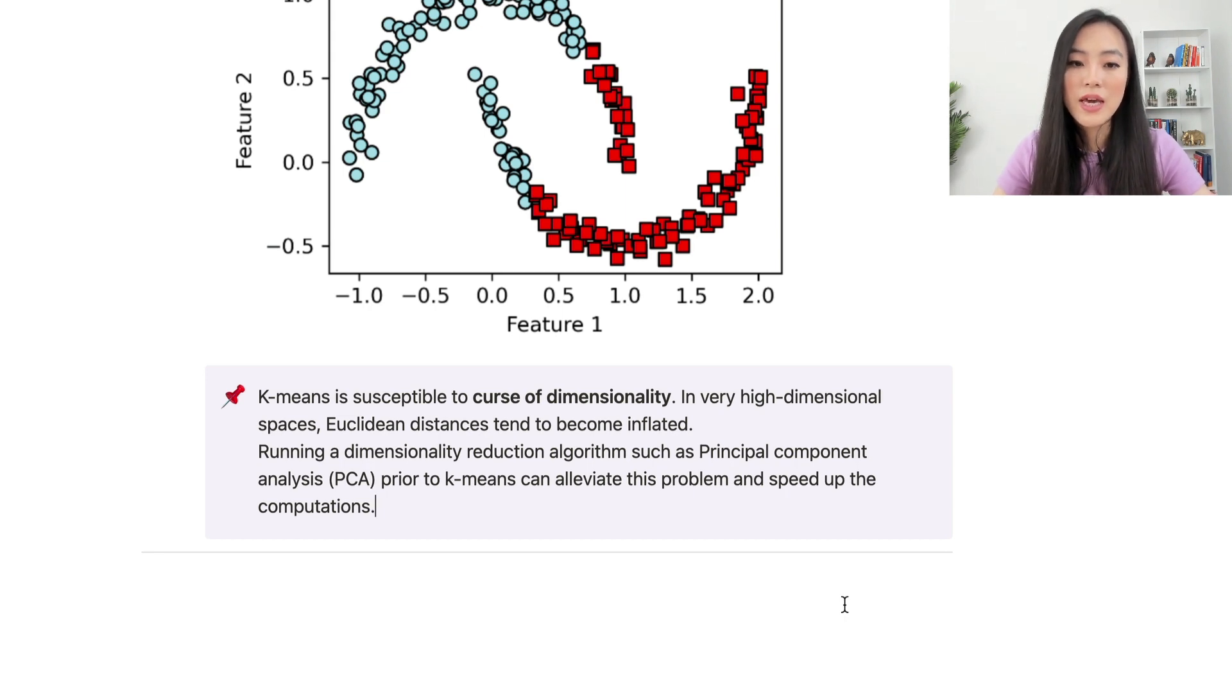Another downside of the K-means algorithm is that it's susceptible to curse of dimensionality. In very high-dimensional spaces, Euclidean distances tend to become inflated. So in this case, we should run a dimensionality reduction algorithm such as Principal Component Analysis prior to K-means, which can alleviate this problem and speed up the computations.